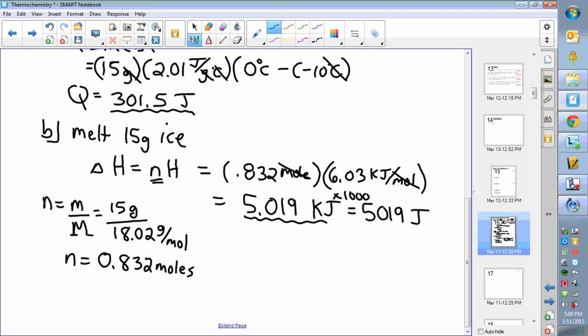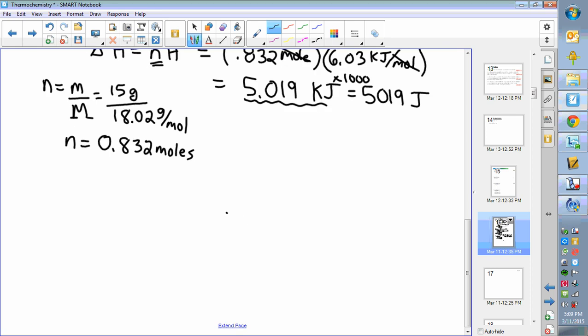Okay, so now you're just dealing with water—water at zero degrees. So our next step is part c, to take water at zero and turn it into water at 100 degrees. So to do that, we're back to a q equals mc delta t formula because the temperature is changing. We still have a mass of 15 grams.